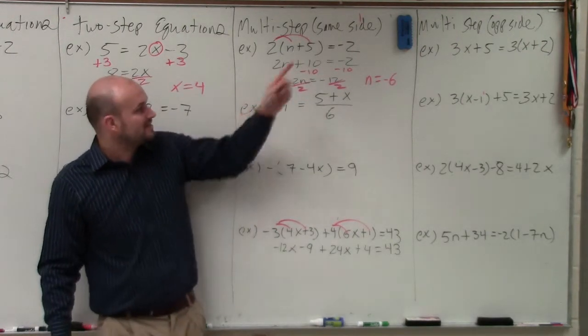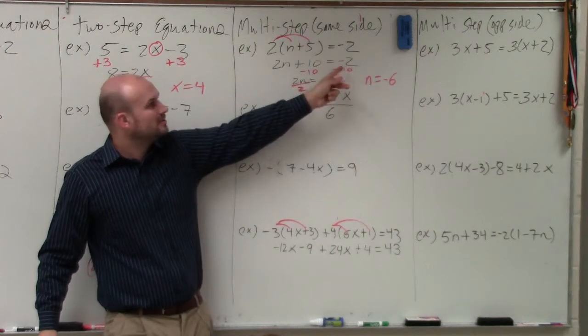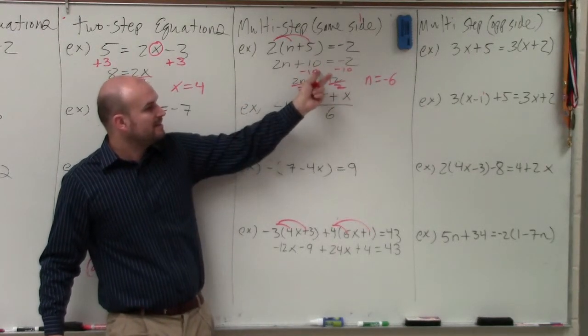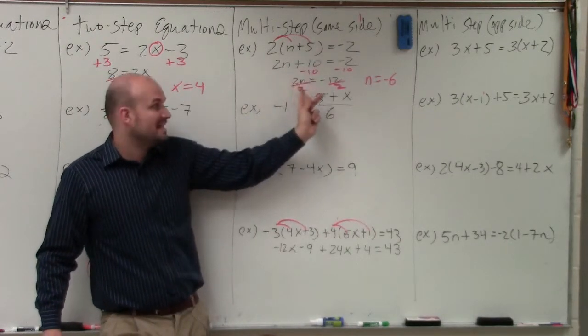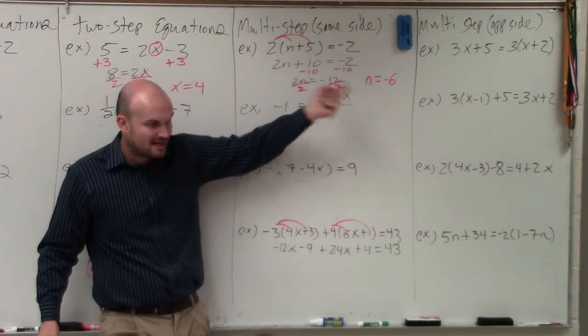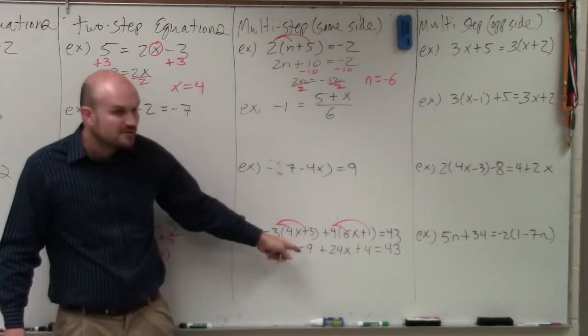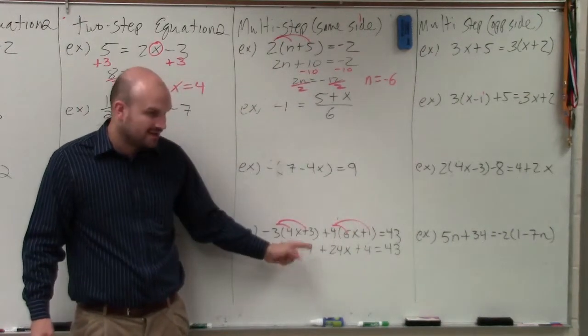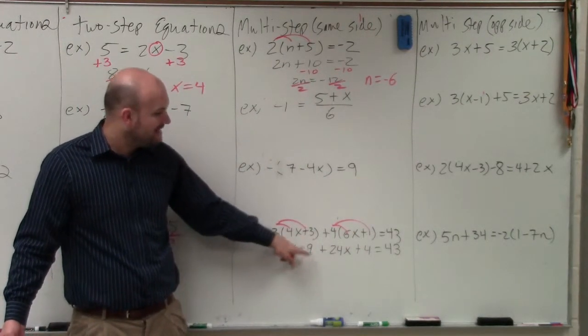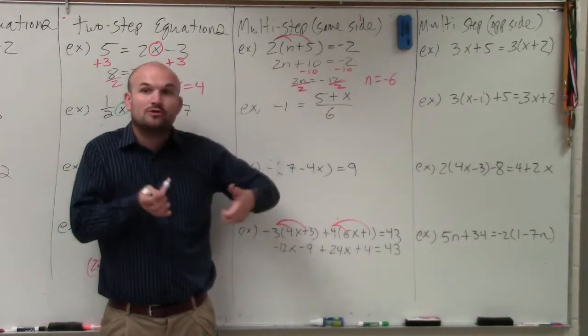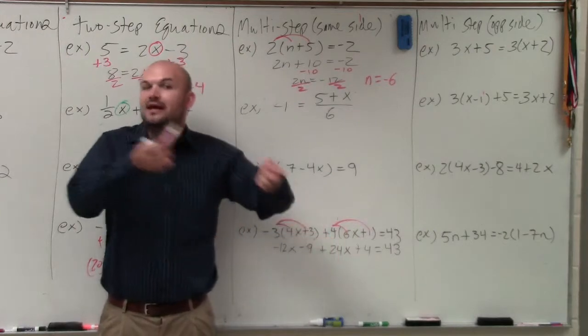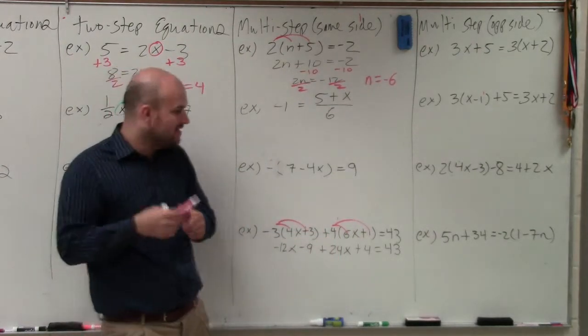The common mistake that students will make is they'll say, oh, two numbers. So when we want to get rid of here, when we basically are combining these, we're using the properties of equality. We're subtracting 10 on the left side, subtracting 10 on the right side. And the most common mistake students will do is they'll apply the properties of equality over here. They'll say like, oh, I'll add 9 and add 9 to the same side. That doesn't work.